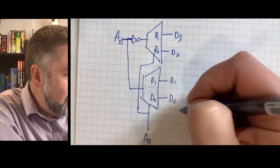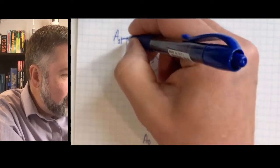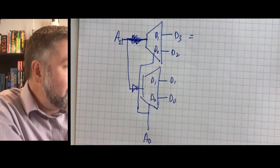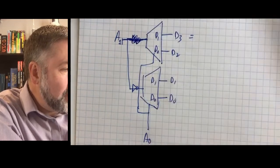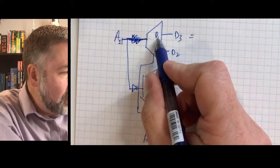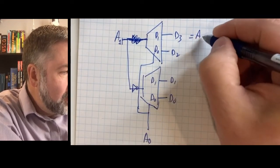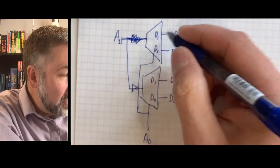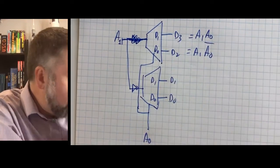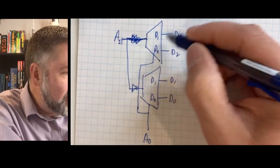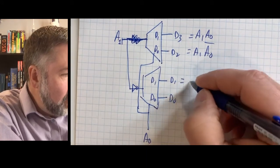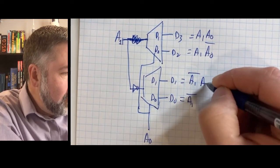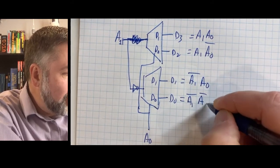Actually the top device needs to use inverted A1 as its enable. Because D3 equals A1·A0, so the bottom decoder handles D3 and D2 with A1 un-inverted. D2 is A1·A0-prime, which is the D0 output of that decoder. Then D1 is A1-prime·A0 and D0 is A1-prime·A0-prime, handled by the top decoder enabled by A1-prime.